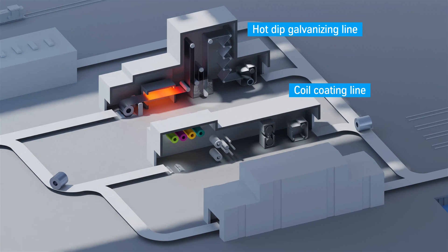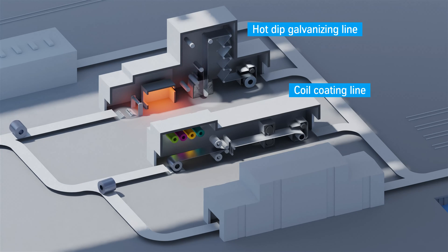In the coil coating line, the strip can also be coated in other ways. Paint films and other coatings allow the sheets to be immediately processed into finished products, for example, for facades and household appliances.